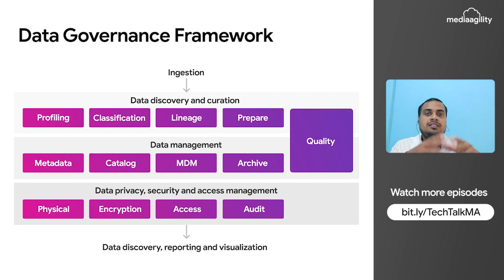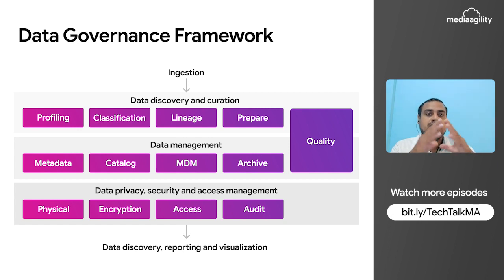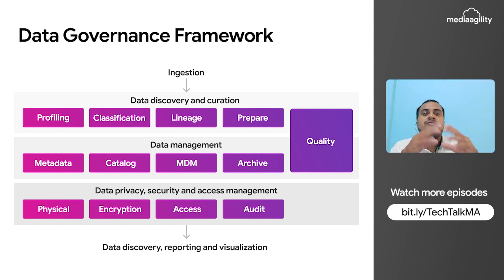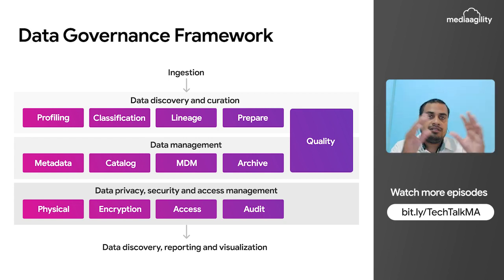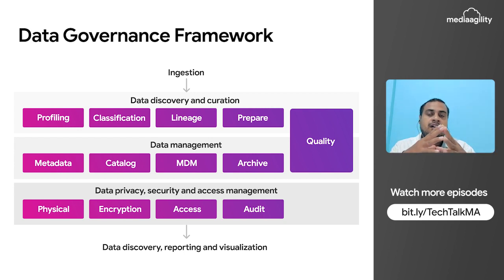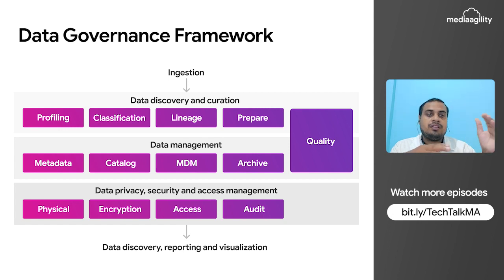The next step is data privacy, security, and asset management — access management. This is where you understand how security things are managed: where the data is present, whether it is on a physical drive or encrypted, how a user can access the data, and then we have a proper audit of how data is moving from one place to another.